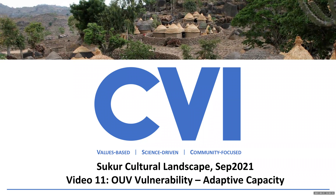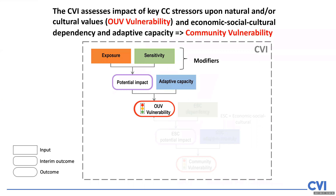This is video 11 for a secure cultural landscape assessment. Video 11 talks about adaptive capacity, a very important part of the overall CVI framework. You've seen this framework a number of times. Adaptive capacity is shown in that blue box in the centre, and you can see it is a very important part when combined with the potential impact to assess OUV vulnerability. This video will show you how we do that in terms of adaptive capacity.